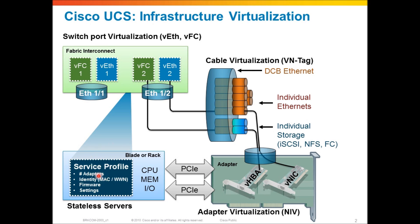That service profile, because it's abstracted from any physical machine, is an XML entry in a database that can be applied to any blade server or any rack mount server. That server will program itself with all of those settings — that's really what provides the stateless capability of UCS. The service profile defines the number of adapters, and because we define the number of adapters, the system will automatically provision the virtual cables to connect those virtual adapters to their virtual switch port. All of that is automatically provisioned based on this single service profile.